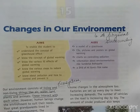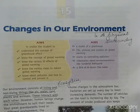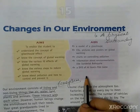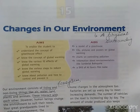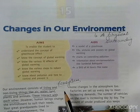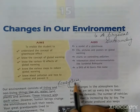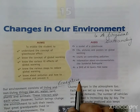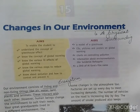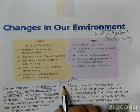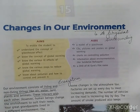Both living and non-living things interact with each other. When they both interact with each other, they form a system, and this system is known as an ecosystem.